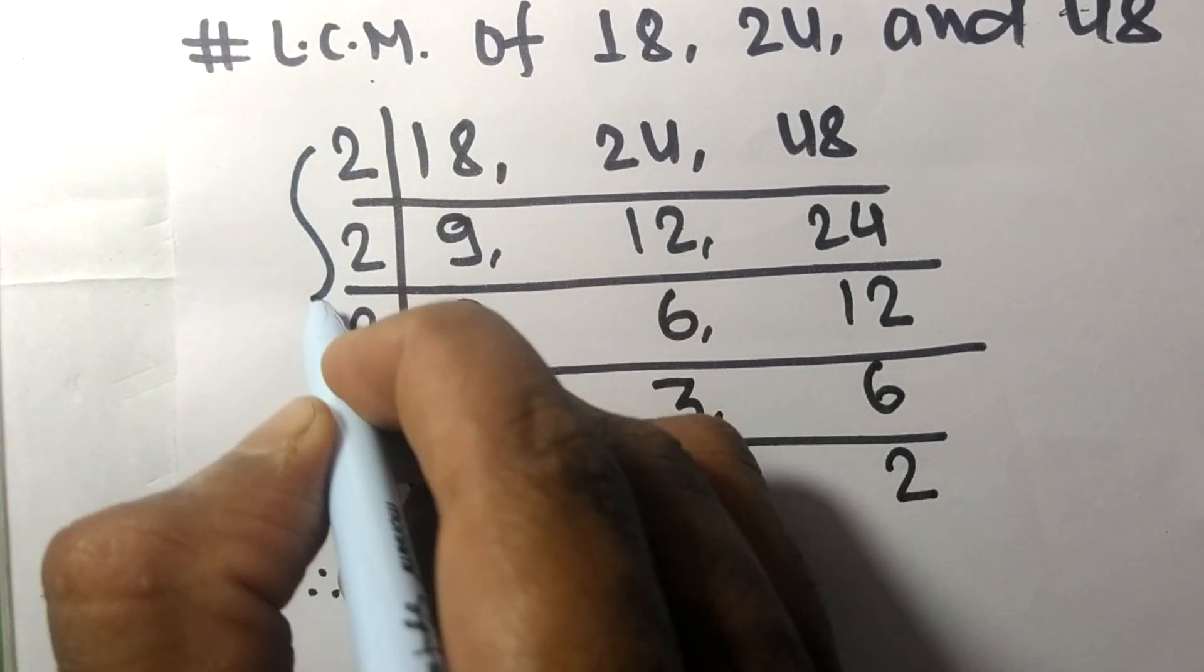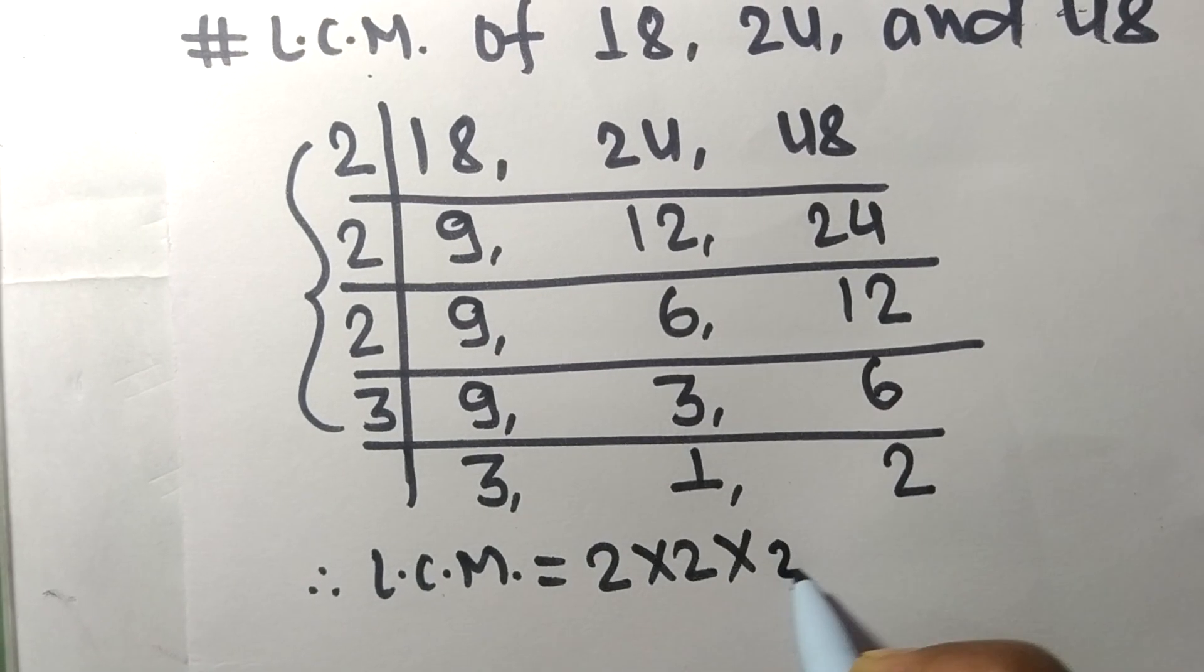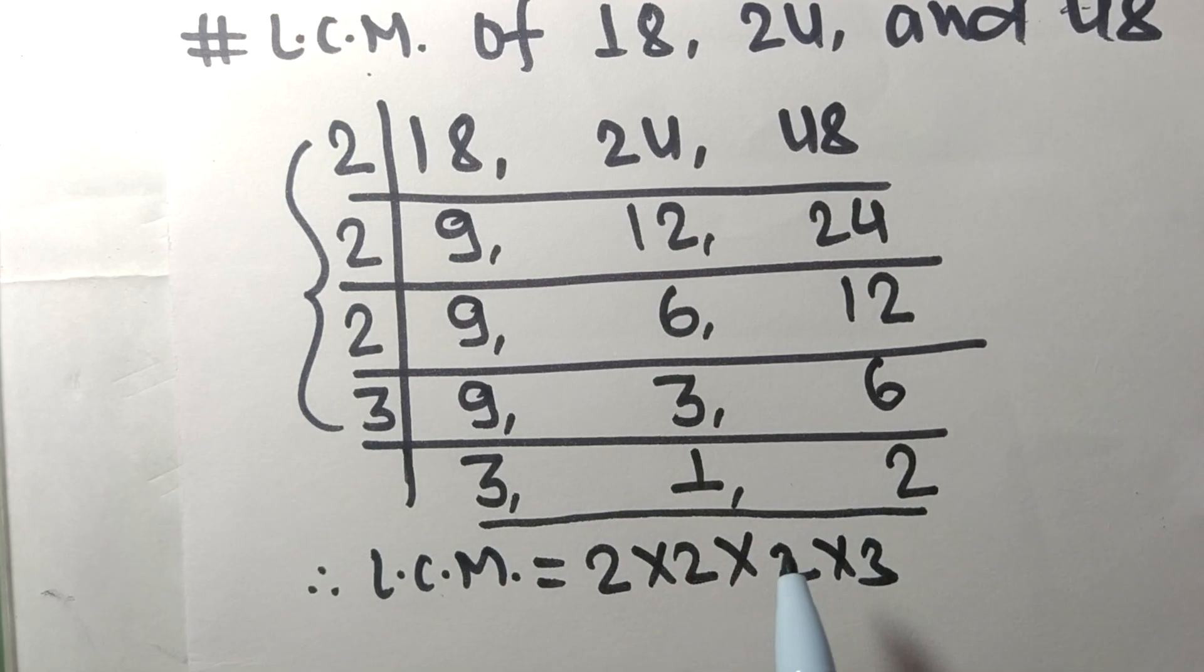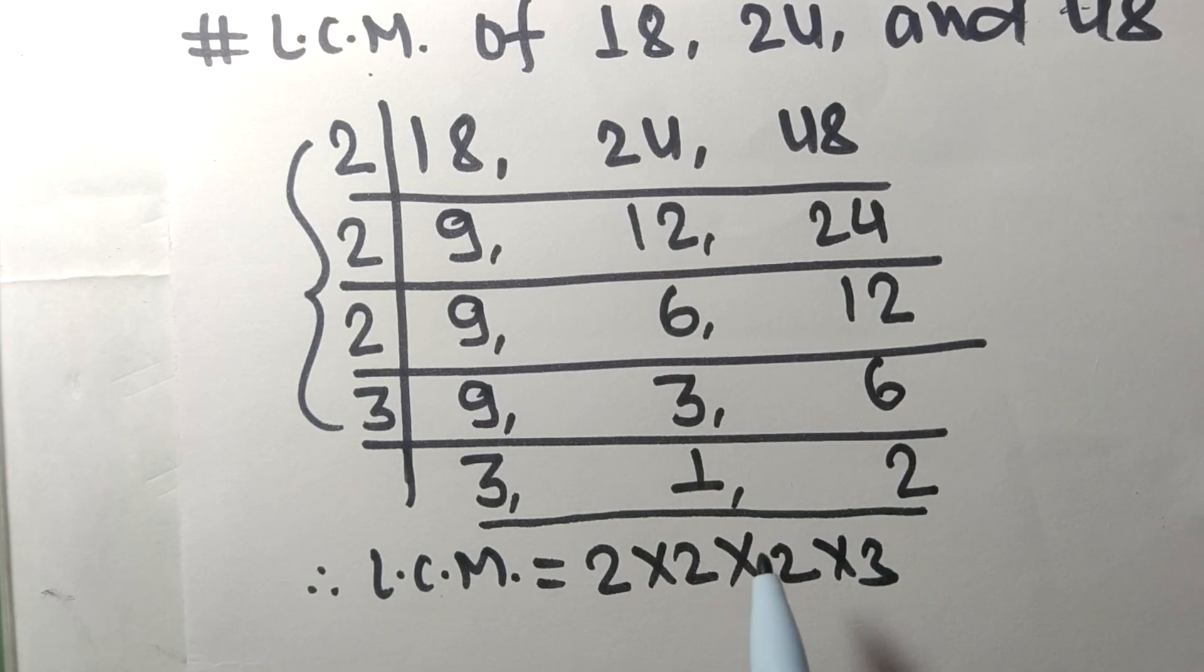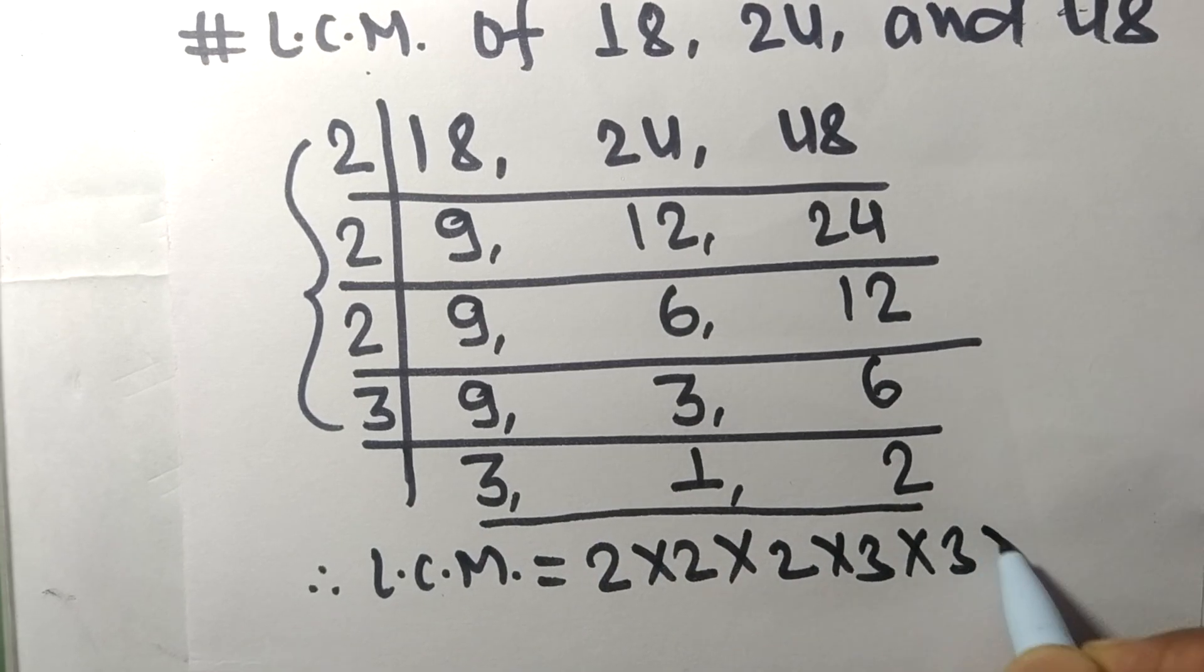Equal to, from this side, 2 times 2 times 2 times 3, and from this side we choose the numbers greater than 1, that is 3 and 2, so multiplied by 3 and 2.